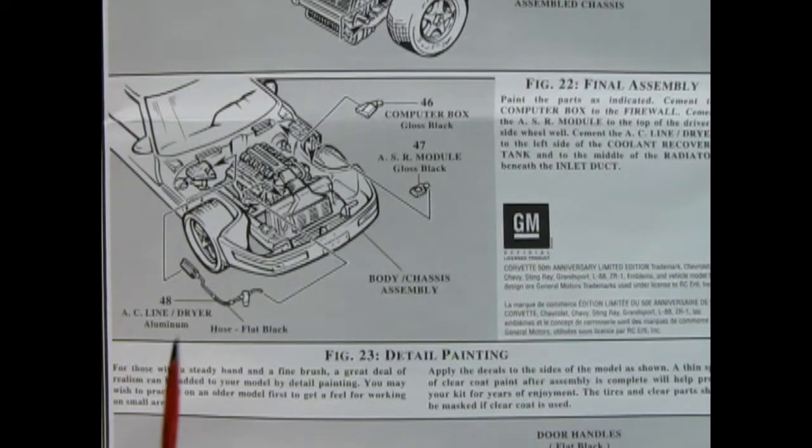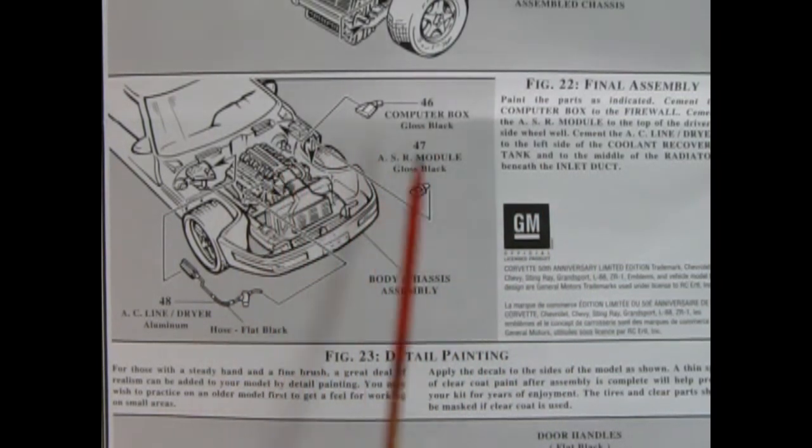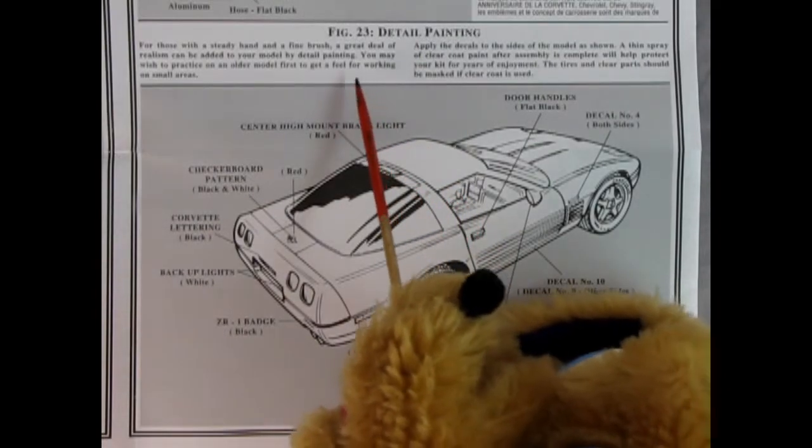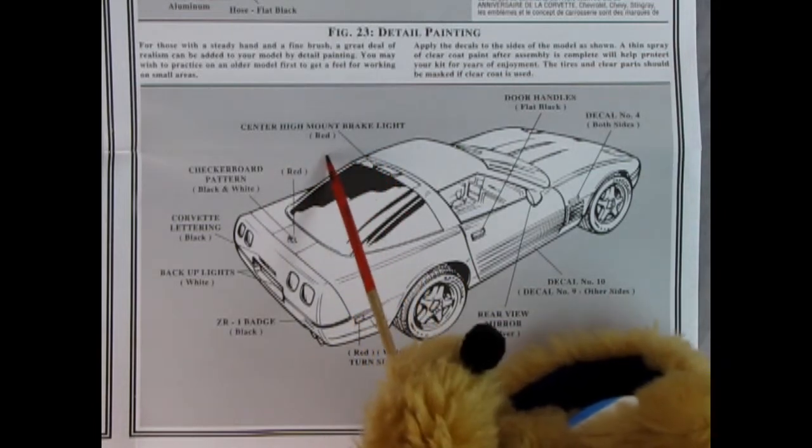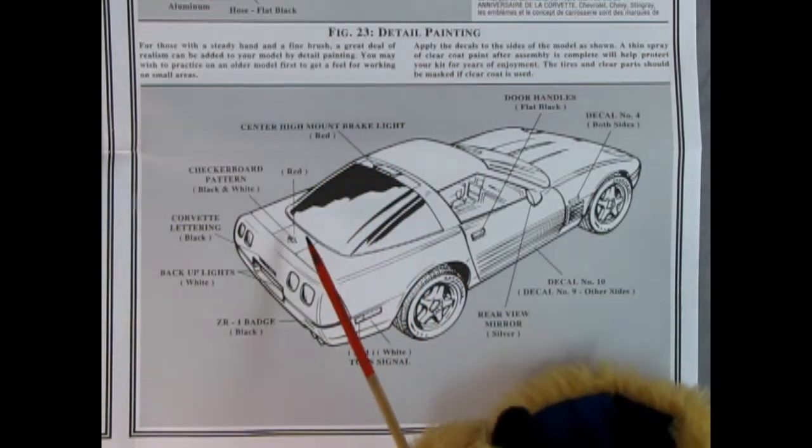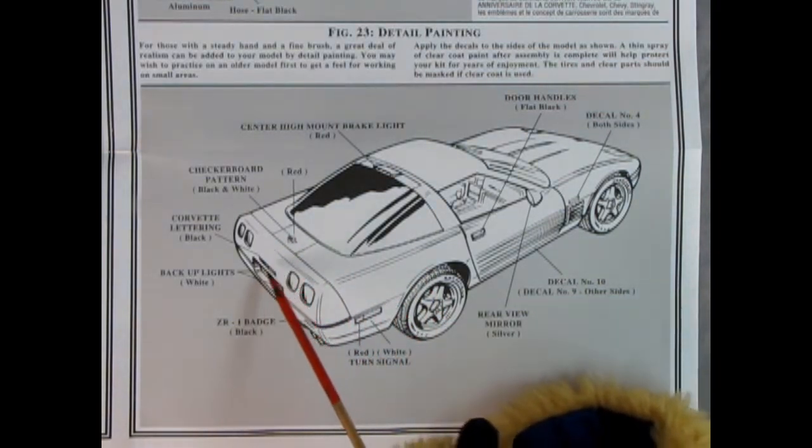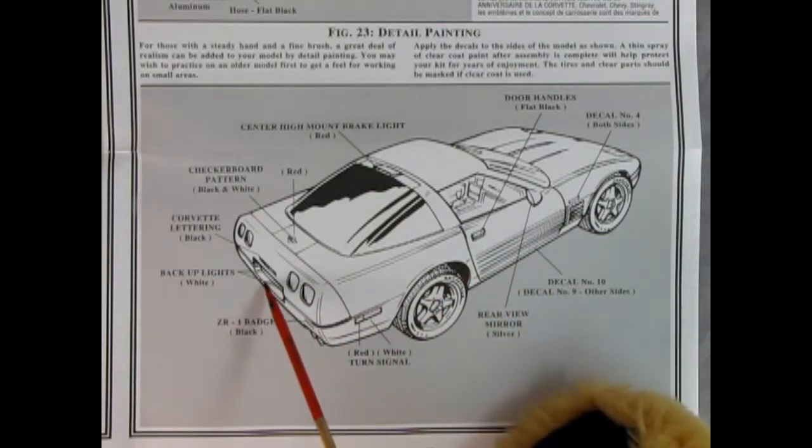Now here in this panel we see some additional final assemblies. We've got the computer box being glued in place, the ASR module and our AC line dryer all going up under the hood. Our detailed painting step comes in figure 23, and here we can see that it says to paint the high mount center brake light in red and checkerboard pattern and some red into our Corvette emblem here. And you can paint your Corvette lettering in black with a white turn signal down here. There's your rear view mirror, and here is decal number nine and ten. We also have a license plate decal going into the back.